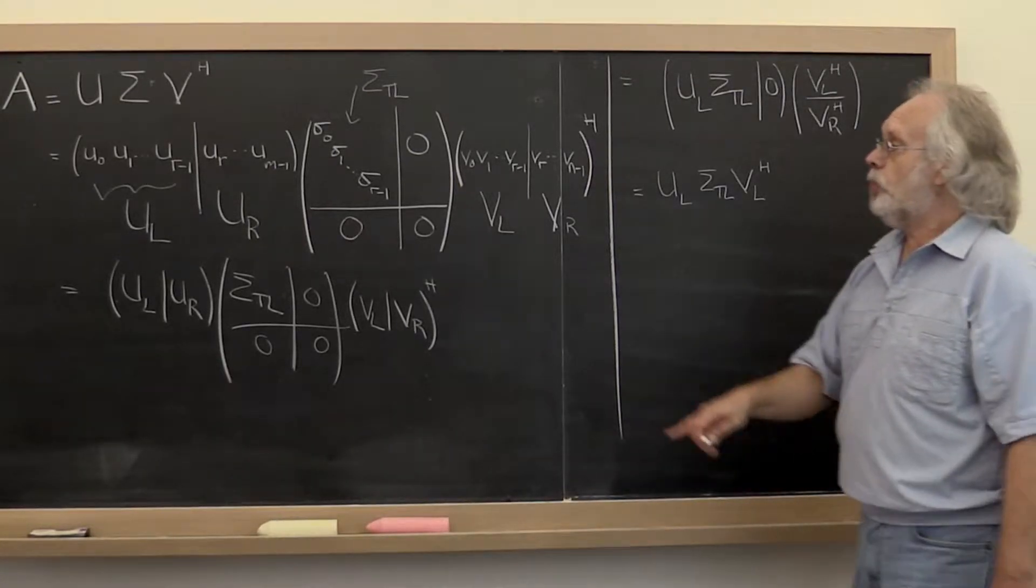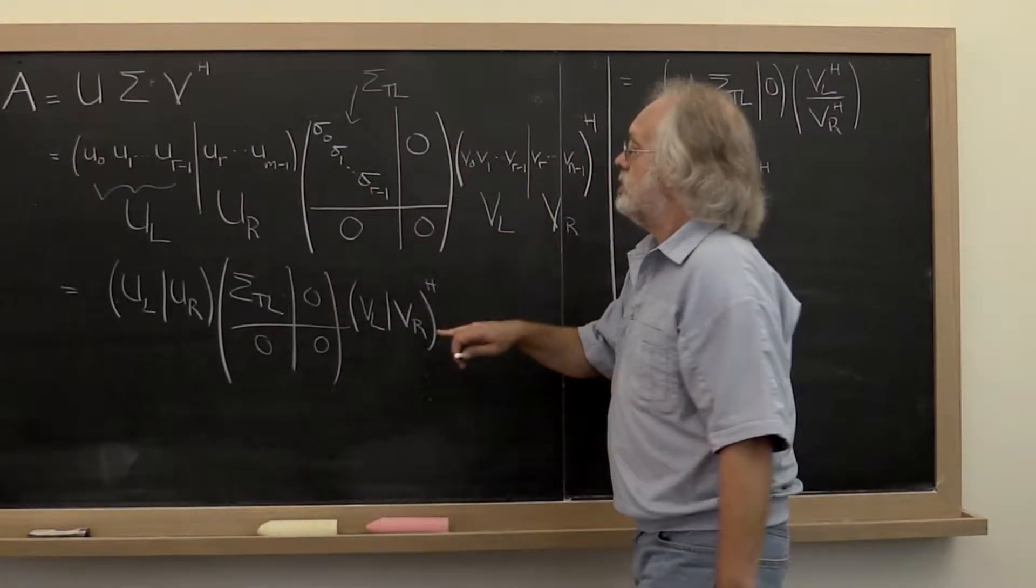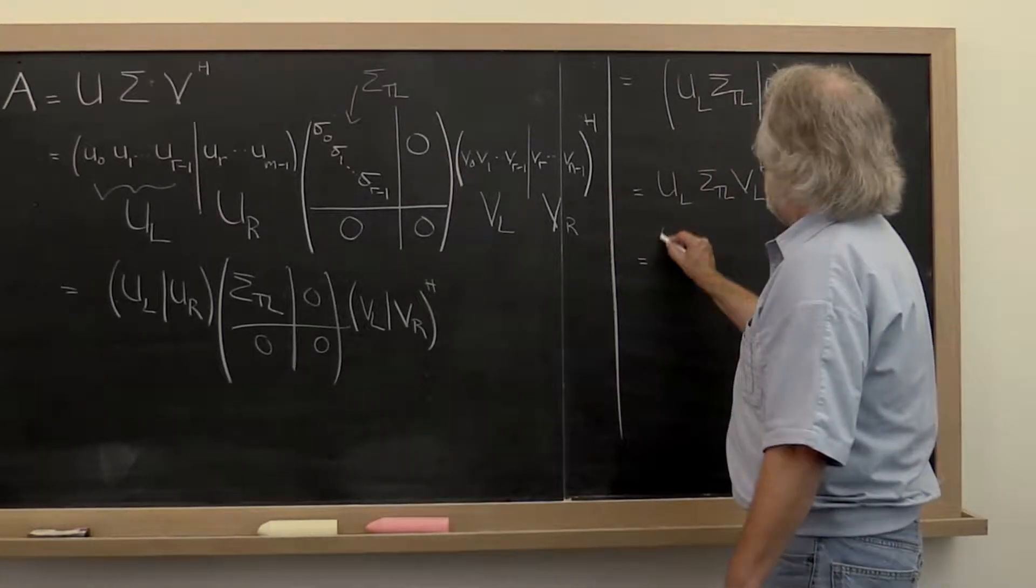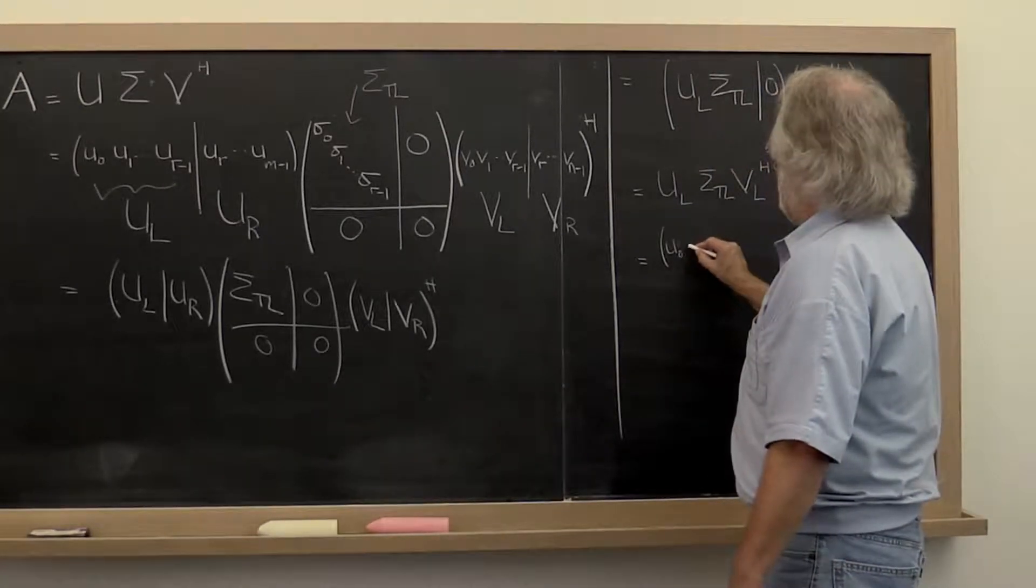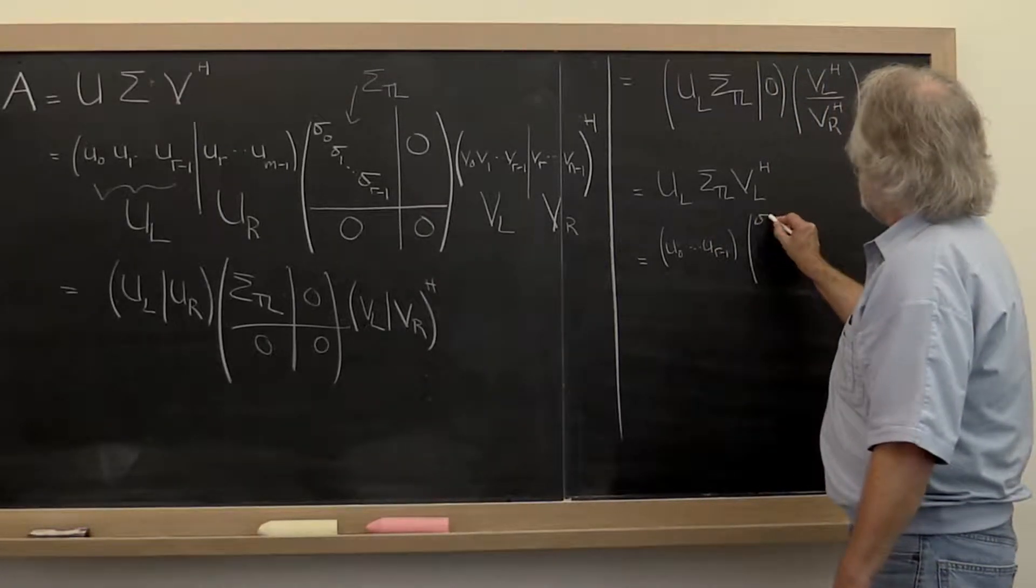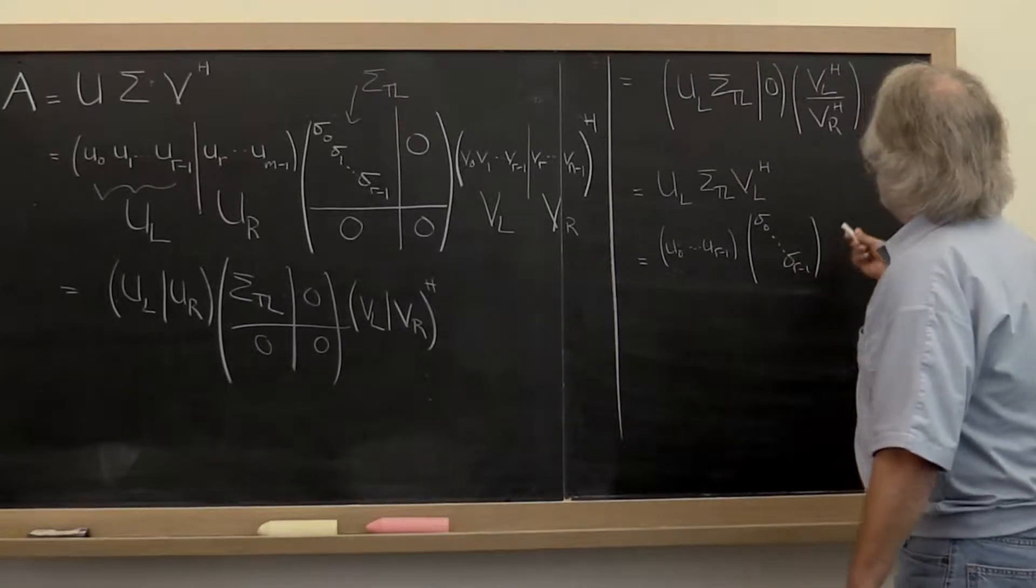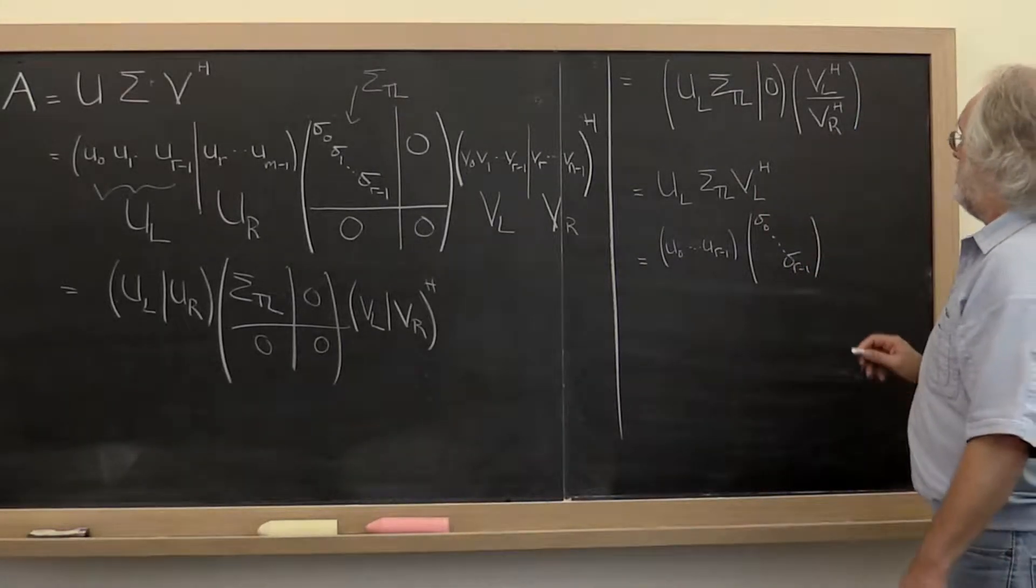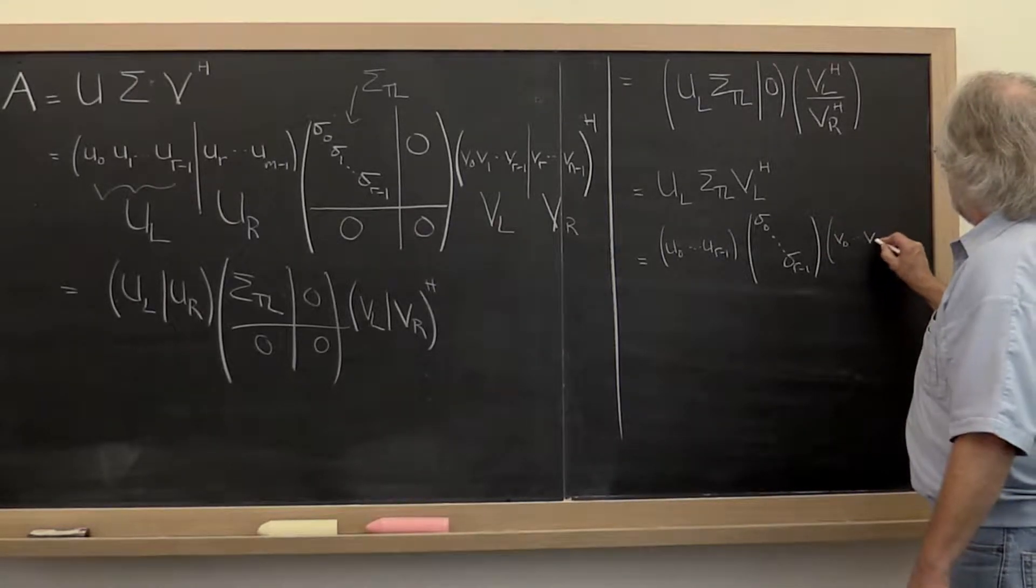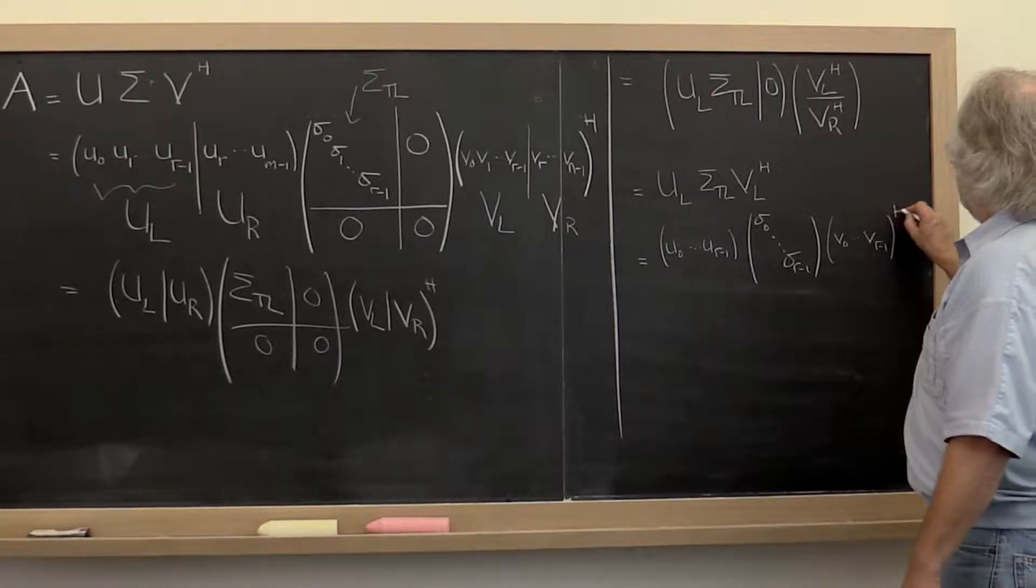Now if we go back to exposing individual columns and the diagonal, then we get that this is U zero through U r minus one times the diagonal matrix sigma zero through sigma r minus one times the Hermitian transpose.